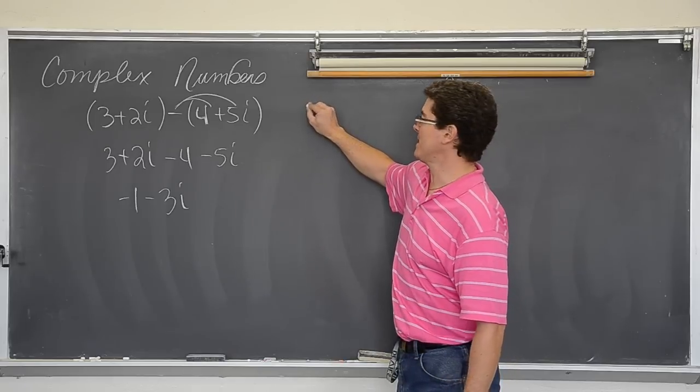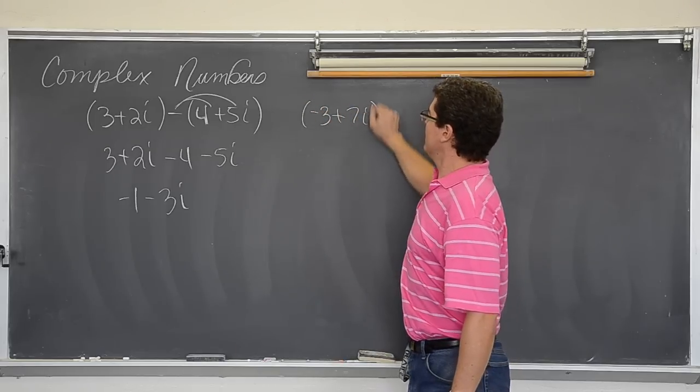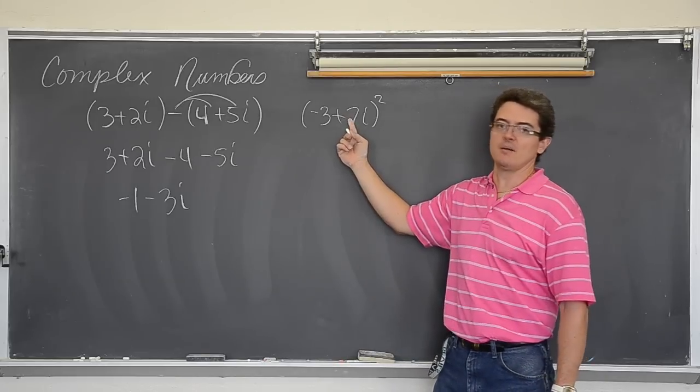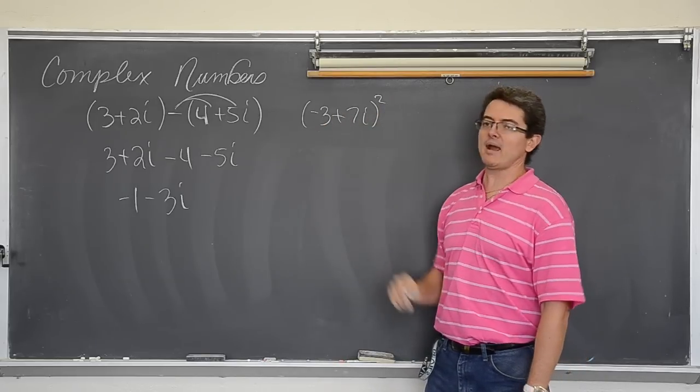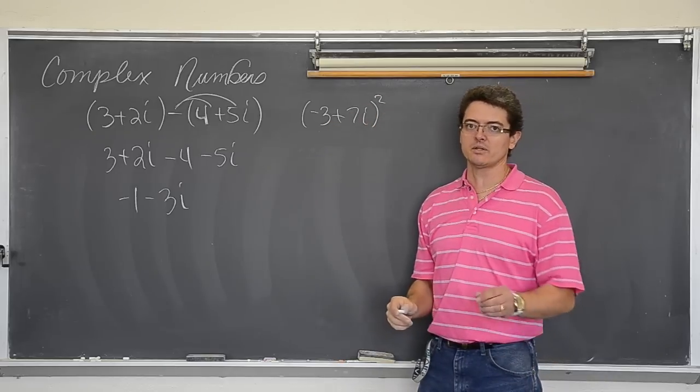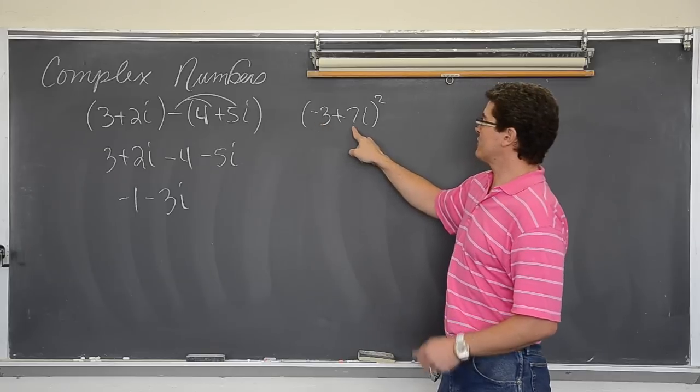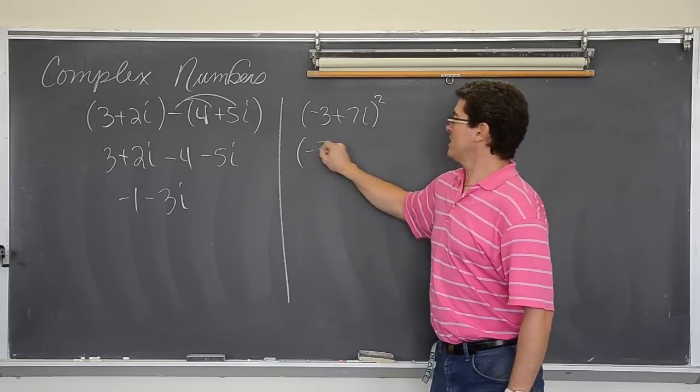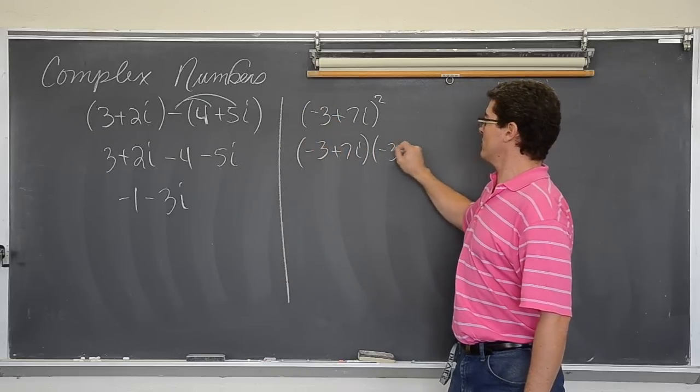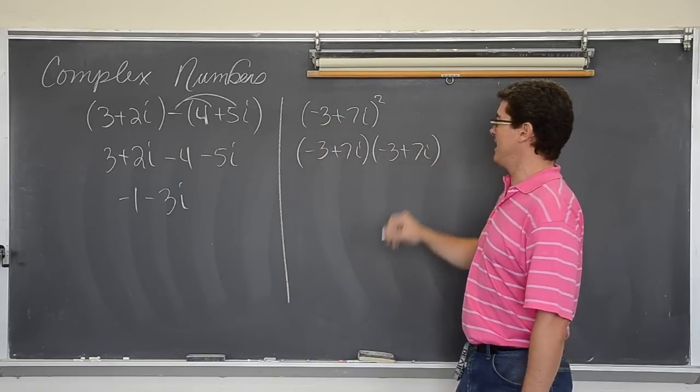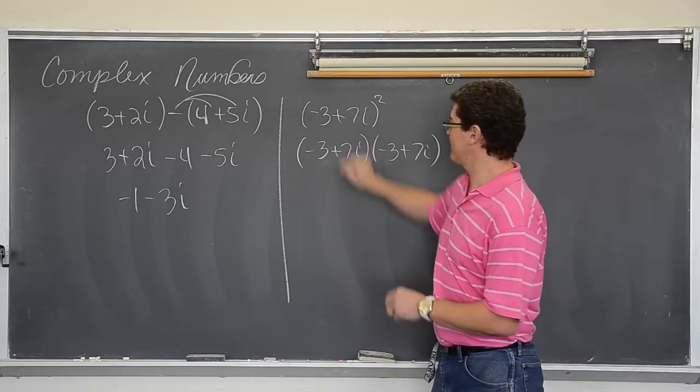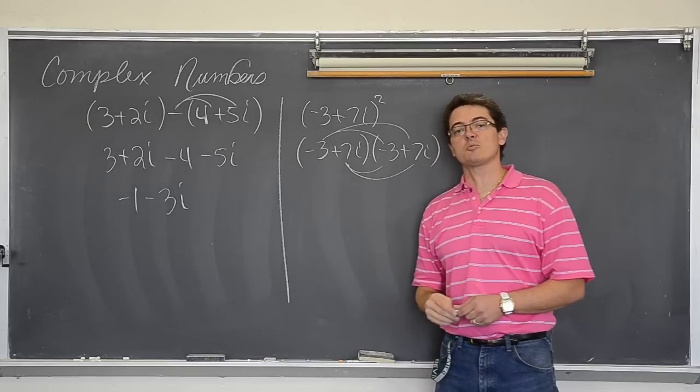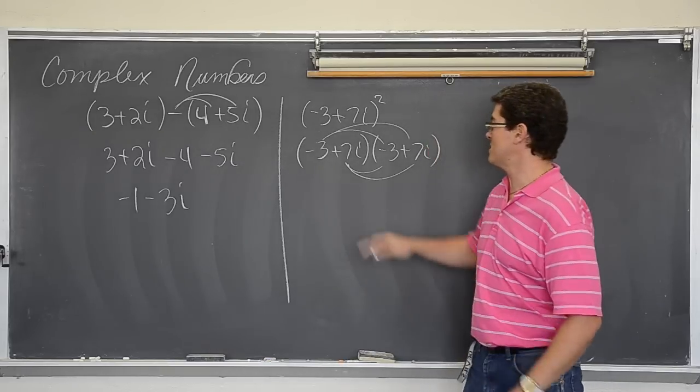Let's take a look at this example. Negative 3 plus 7i squared. Oh how many times do I see kids mess this up? We have a binomial squared. It is not 3 squared and 7 squared. No, no, no. It is negative 3 plus 7i times negative 3 plus 7i. Please take the time and save your teacher a lot of grief and actually distribute those together please so that you have all the terms. You don't miss one.